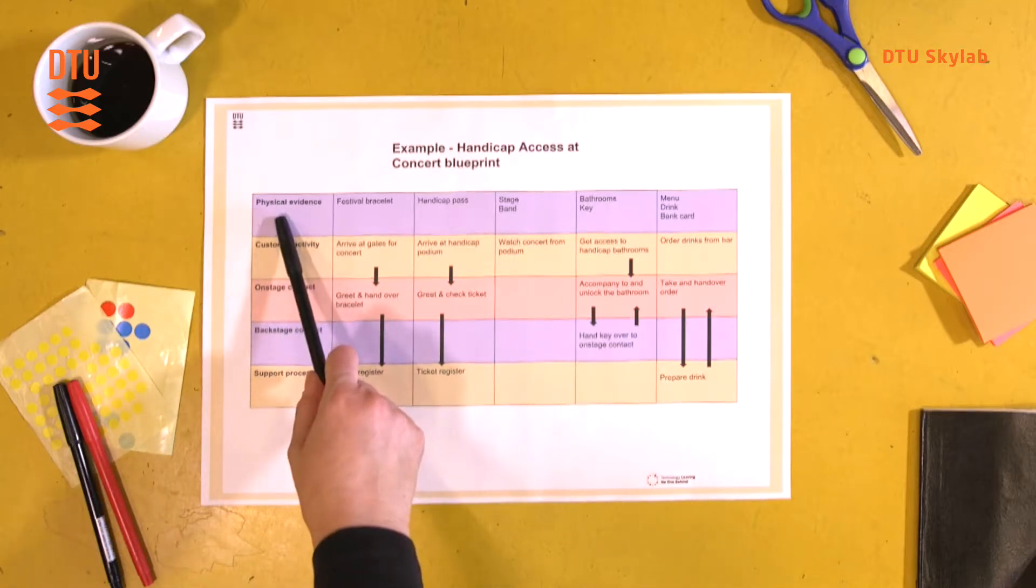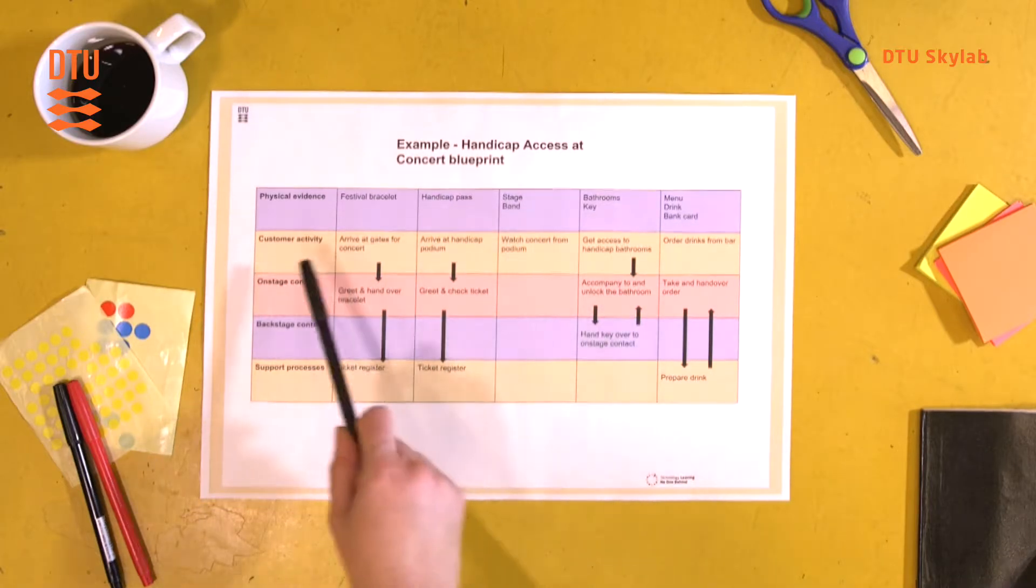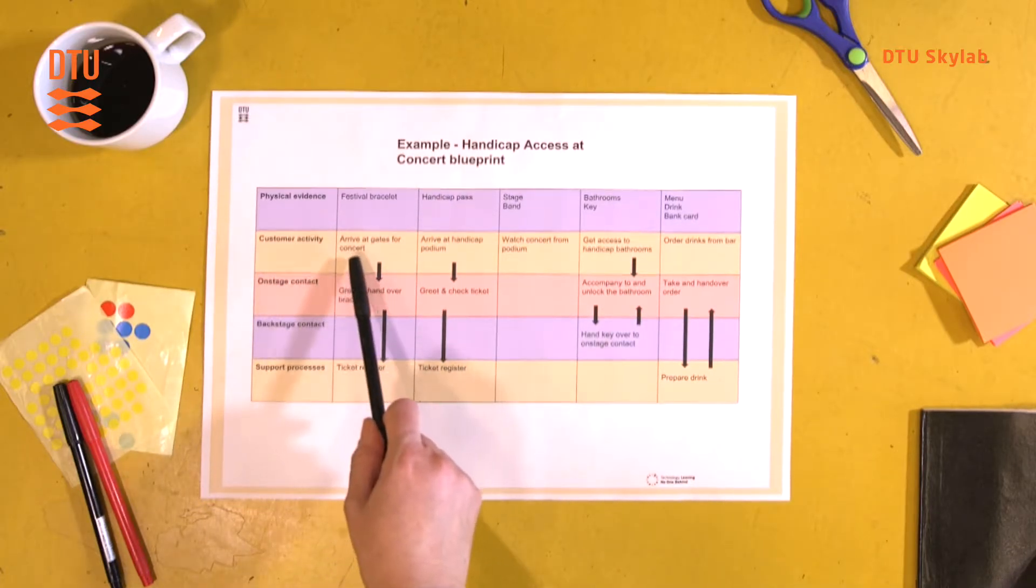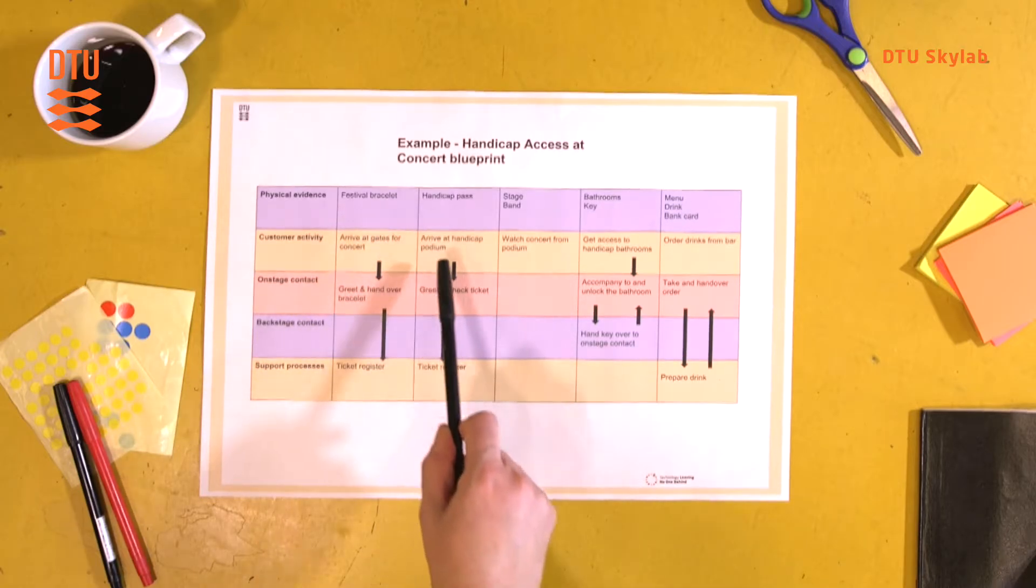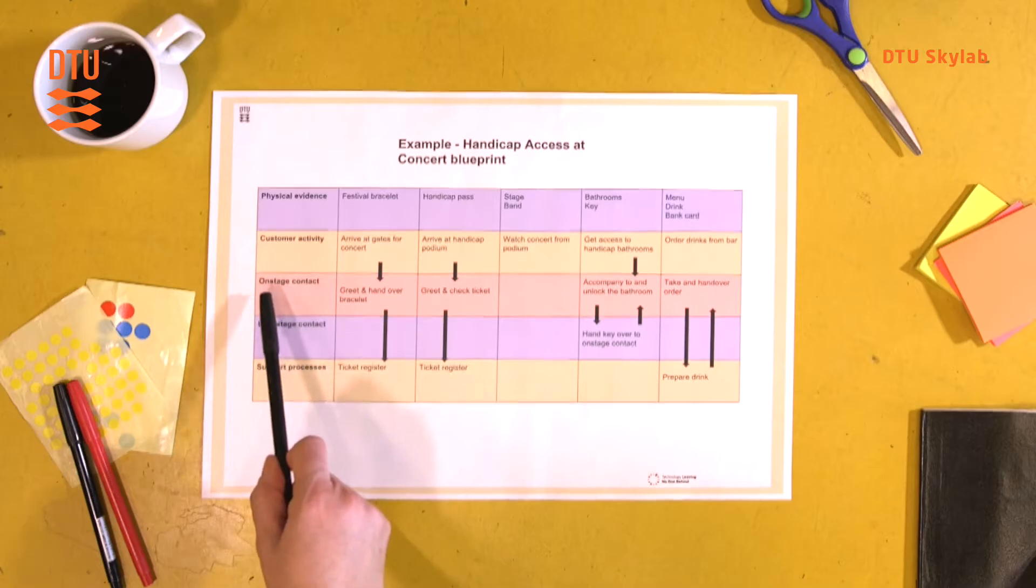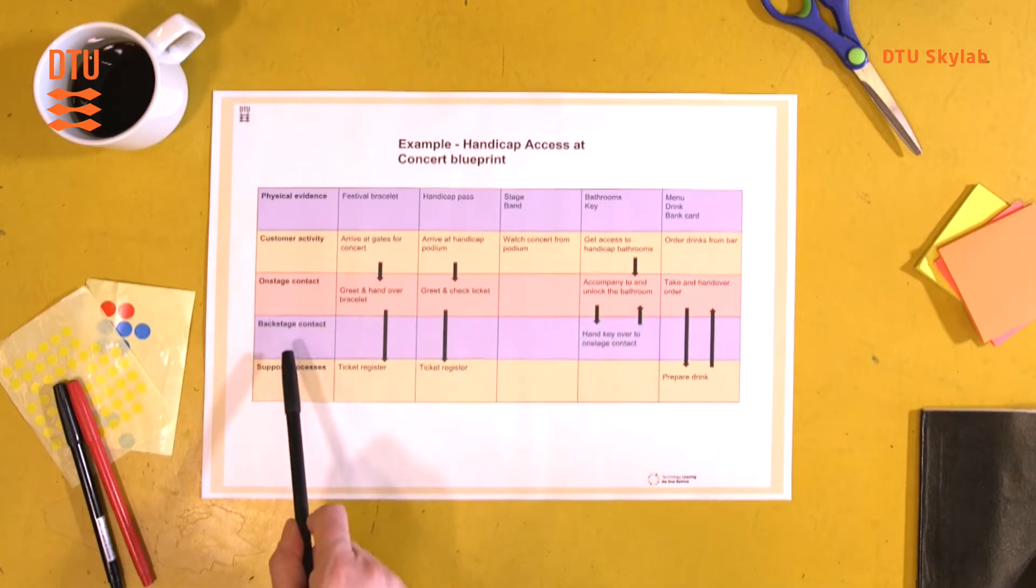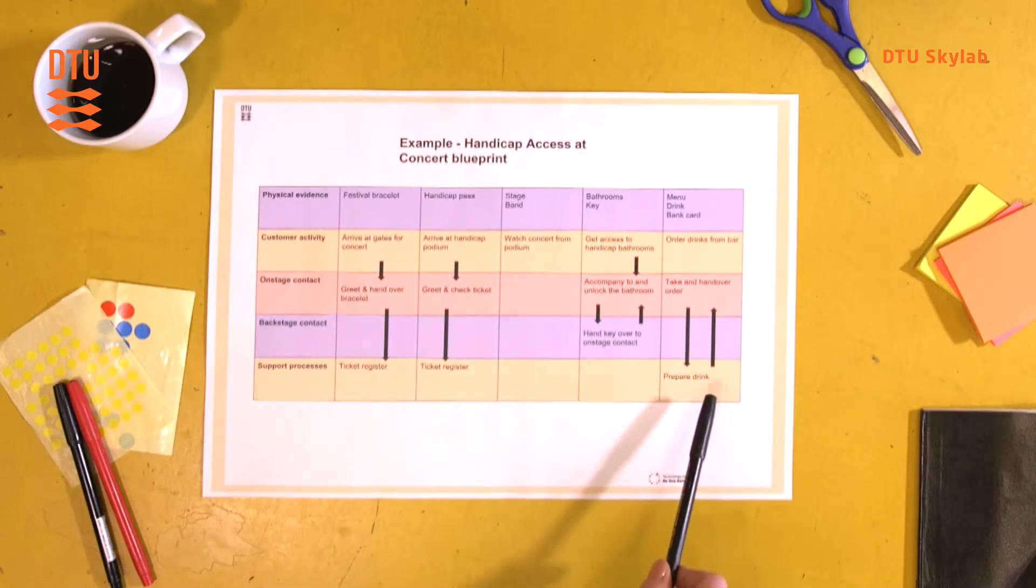So first you need to fill in some physical evidence that are basically physical objects that are relevant to your blueprint. Then the customer activity, which is corresponding to each of the physical evidence. Then there's usually some onstage contact for some of them. Some of them might have some backstage contact. And then the support processes you also need to register.